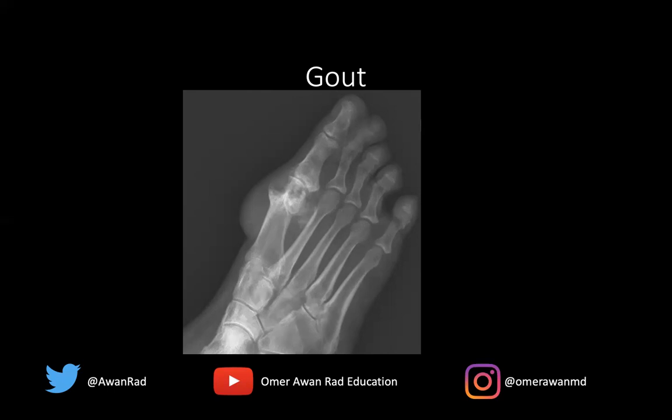Gout is due to hyperuricemia with increased uric acid levels. It's due to monosodium urate deposition around joints, leading to destruction of the joint over time. It's an inflammatory arthropathy where you'll get erosions.